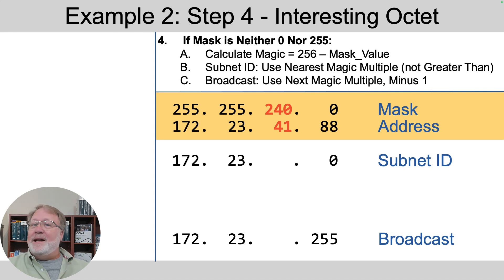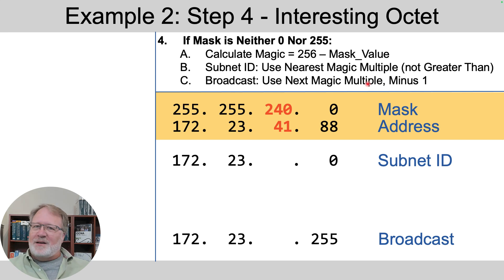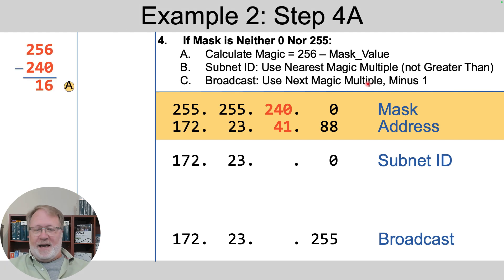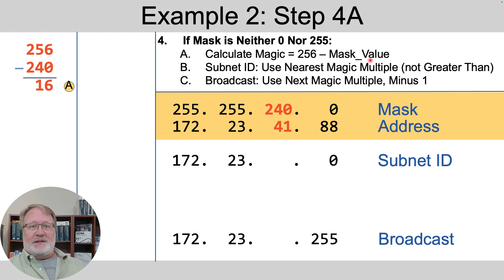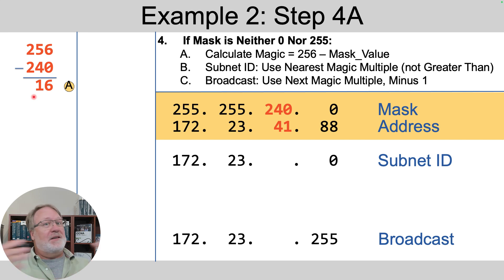Step four — if the mask is neither 0 nor 255, we calculate a magic number. Step 4a: calculate the magic number as 256 minus the mask's value in the interesting octet. The mask's value is 240 in this interesting octet. 256 minus 240 is 16. That's what I call the magic number. Nothing magic about it — it's just a useful thing to calculate. It turns out the subnet ID will be some multiple of this calculated magic number.